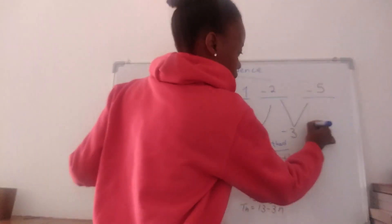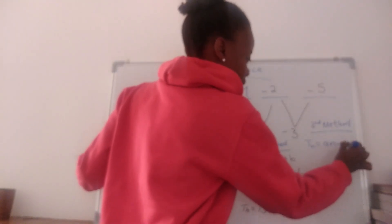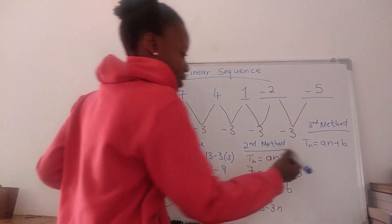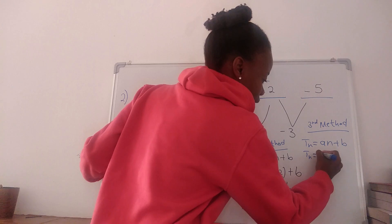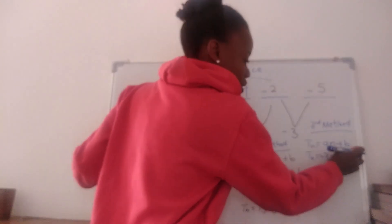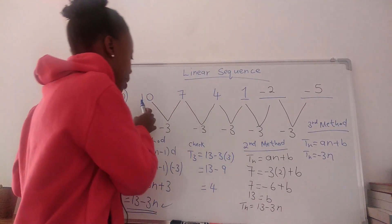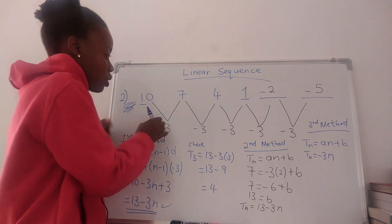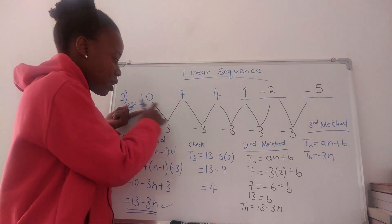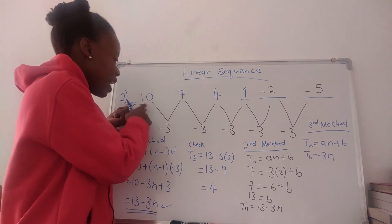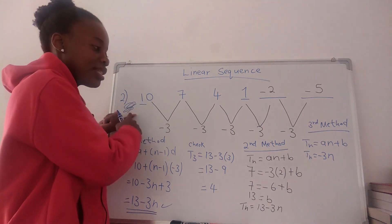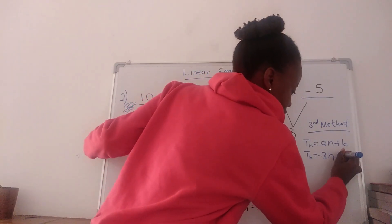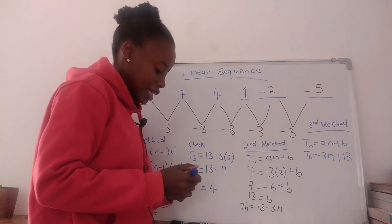Using Method 3: Tn equals an plus b, where a is negative 3. To find b, look for the term before the first term. From 7 to get to 10 we added 3, so from 10 we add 3 again to get 13. Therefore b is 13 and Tn = negative 3n + 13.